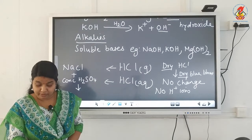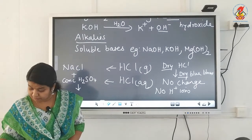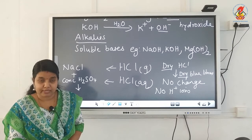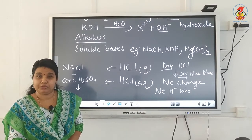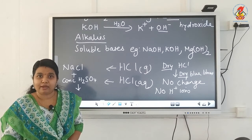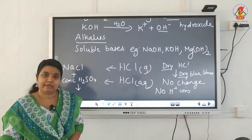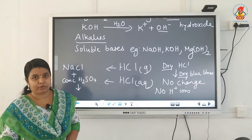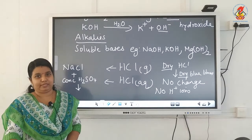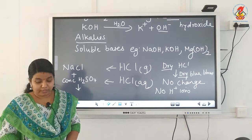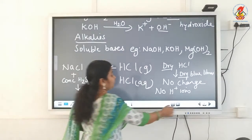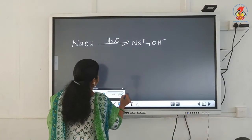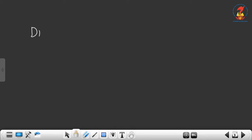That activity is explained on page number 23, activity 2.9 and figure 2.4: preparation of hydrogen chloride gas and how it behaves toward wet and dry blue litmus papers. This is an important question — it was last year's board question — so learn it from the textbook.